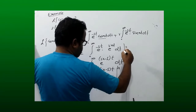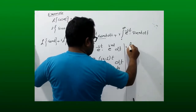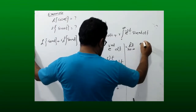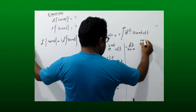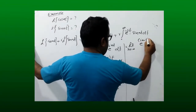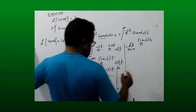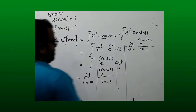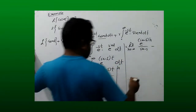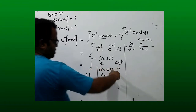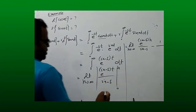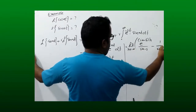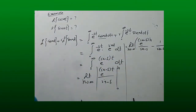Substituting the upper limit h: we get e^((ia - s)·h) over (ia - s). Substituting the lower limit 0: e^0 = 1, giving minus 1/(ia - s). Now we take the limit as h approaches infinity.